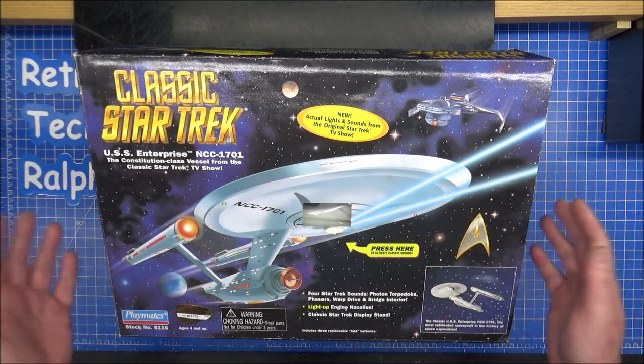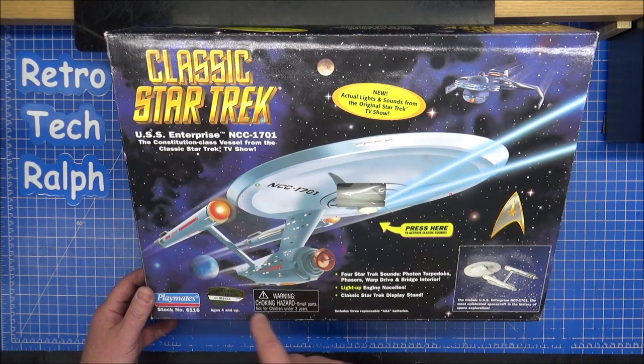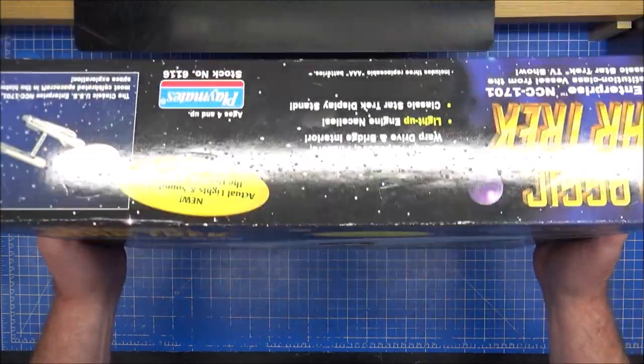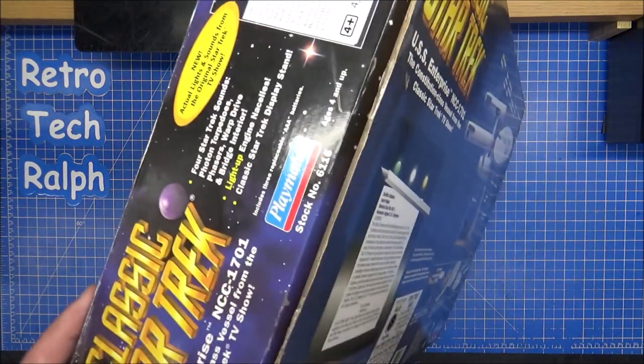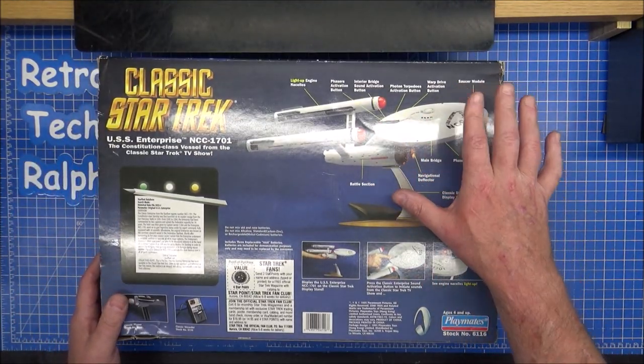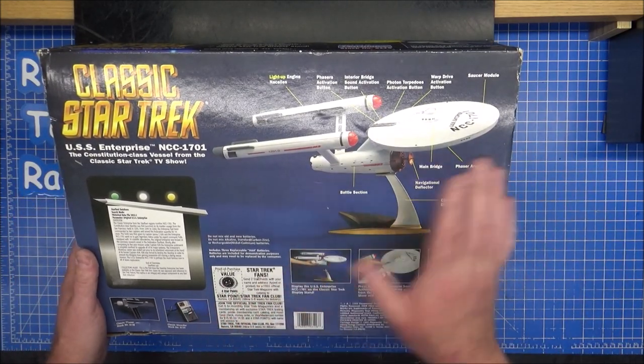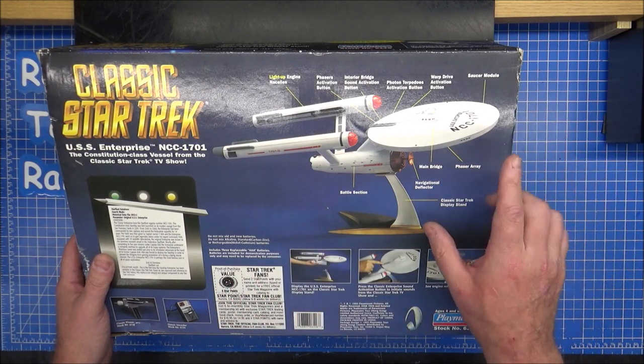So, we have the classic Playmates Enterprise, collector's number 66851. Bought this on eBay a little while ago, but getting around to doing videos is a problem, because just trying to get the time to do these. It looks nice. There are better. The Art Asylum Diamond Select ones are far superior to these.